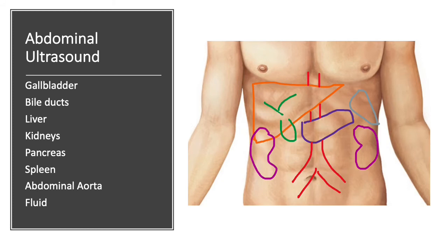The pancreas, which is the centrally imaged blue coloured structure in the diagram, and the spleen, which is above the left kidney, are also assessed with ultrasound, although problems within these organs are not that common.